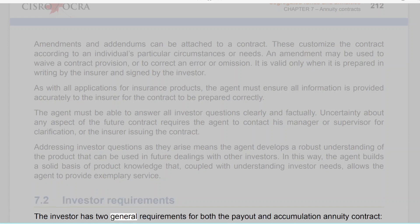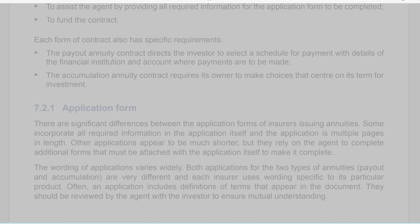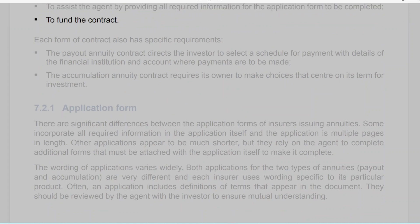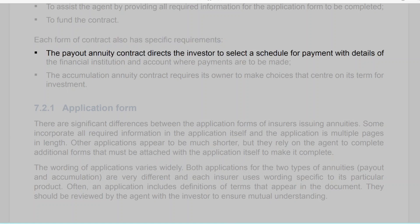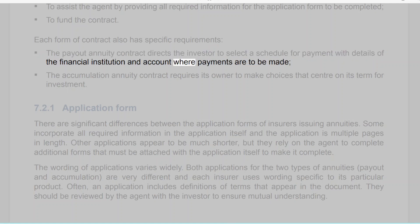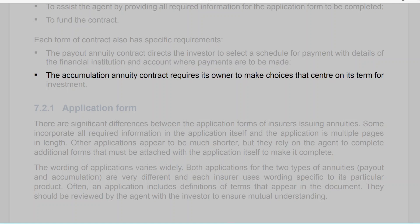Section 7.2: Investor requirements. The investor has two general requirements for both the payout and accumulation annuity contract: to assist the agent by providing all required information for the application form, and to fund the contract. Each form of contract also has specific requirements. The payout annuity contract directs the investor to select a payment schedule with details of the financial institution and account where payments are to be made. The accumulation annuity contract requires its owner to make choices centered on its term for investment.